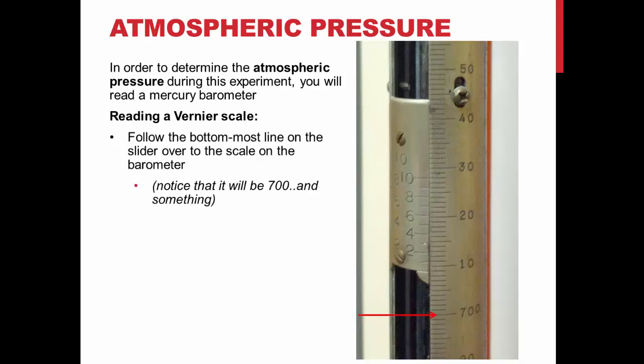Your first number will be read from the bottom of the scale where the zero marker falls on the right-hand scale in the picture shown. The zero falls between 708 and 709, making your first integer 708.